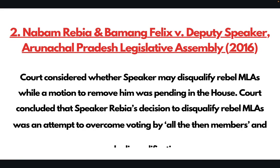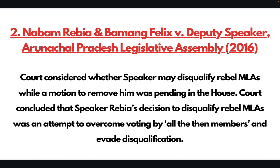The second judgment is the case of Nabam Rebia versus Deputy Speaker, Arunachal Pradesh — a 2016 five-judge bench decision. This judgment addressed whether, even though the Speaker has the power to disqualify MLAs and MPs for defection, it is correct for a Speaker whose own removal is pending in the House to decide petitions under the 10th Schedule. The court concluded that Speaker Rebia's decision to disqualify rebel MLAs was an attempt to overcome voting by members to evade his own disqualification. The court thus deviated from the finding of Kihoto Hollohan, and this is where the problem began.